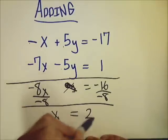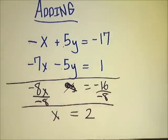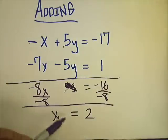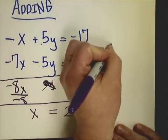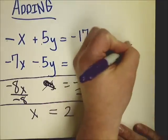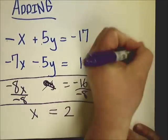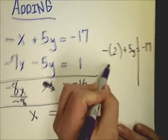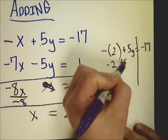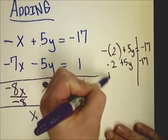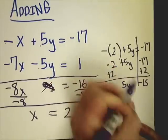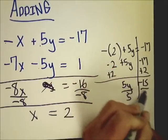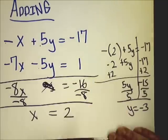And now all I need to do to get my final answer is to go back in and plug this x into one of these equations. I'm just going to plug it into the first one. So I'm going to do negative 2 plus 5y equals negative 17. This gives me negative 2.